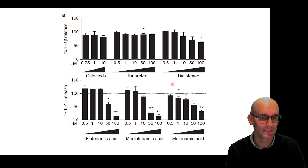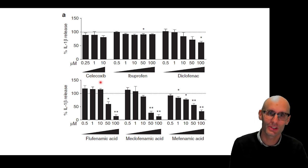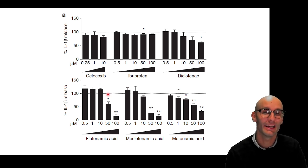You can see diclofenac does some inhibition, but really, these are the stars. Flufenamic acid, meclofenamic acid, and mefenamic acid are all exceptional at inhibiting this NLRP3. We were very excited at the 50 micromolar mark. We would have liked it at lower concentrations, but 50 micromolar is actually clinically relevant. It gets up to around about 75 micromolar in the blood after you take these drugs.